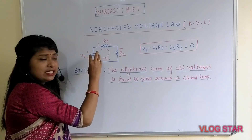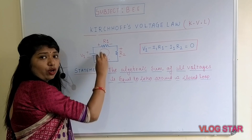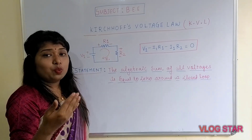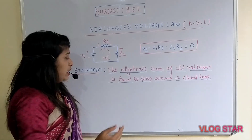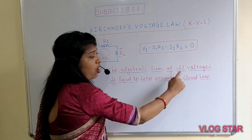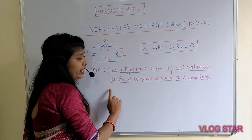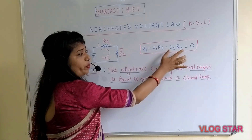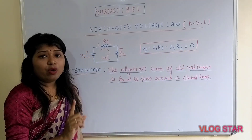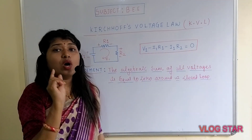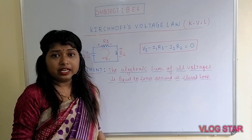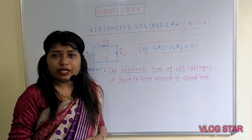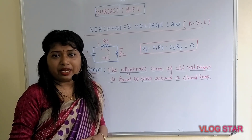Kirchhoff's Voltage Law states that the algebraic sum of all electromotive forces and the voltage drops across each and every resistor is equal to zero — that is, the algebraic sum of all voltages around a closed loop equals zero. So this entire expression should equal zero. In the next lecture we are going to solve problems based on Kirchhoff's Current Law and Kirchhoff's Voltage Law. Thank you.